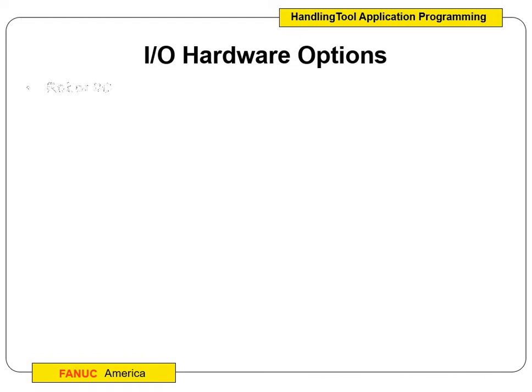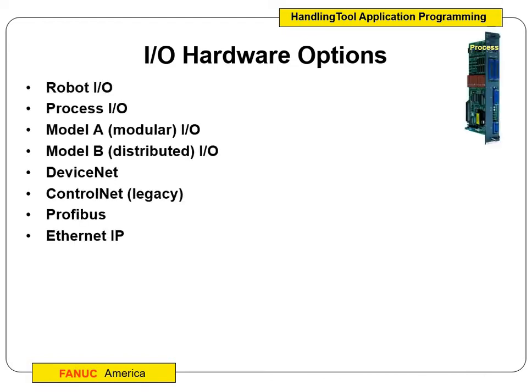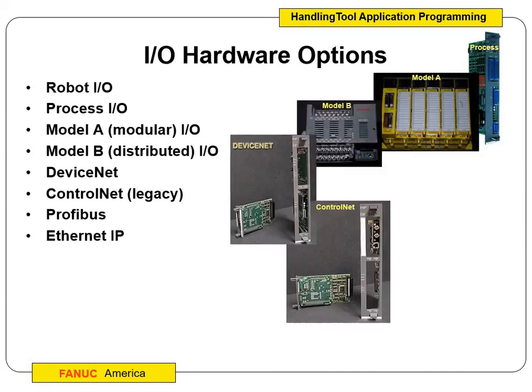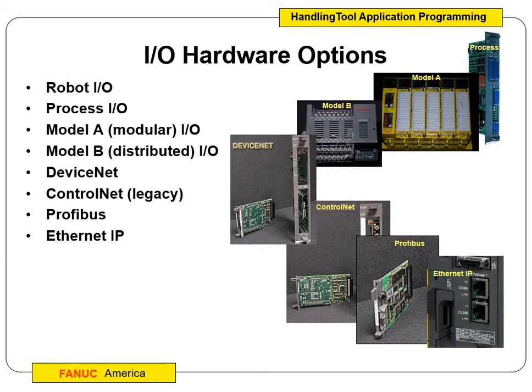Different I/O hardware options: robot inputs and outputs, process inputs and outputs, modular A and B that we just talked about, and then DeviceNet, ControlNet, and Profibus. DeviceNet is Allen Bradley's proprietary equipment that can be put in there. Profibus is what Siemens uses. So these are different ways of communicating with PLCs and control systems through proprietary equipment — different companies have different ways to interface with FANUC robots. Think of it like Apple versus Windows or Android — they can still do the same tasks but you've got to go with their equipment. And we have Ethernet IP because we have a vision system and want to hook up to the camera through the controller.